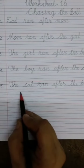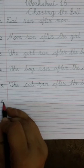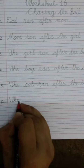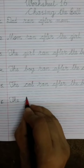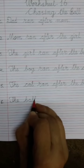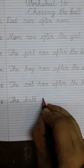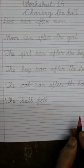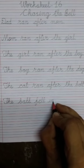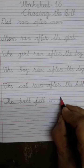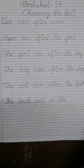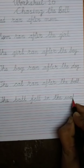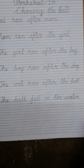Leave one line and write number 6. Number 6: The. T – H – E. The. Ball. B – A – double L. Ball. Fell. F – E – double L. Fell. In. I – N. In. The. T – H – E. The. Water. W – A – T – E – R. Water.